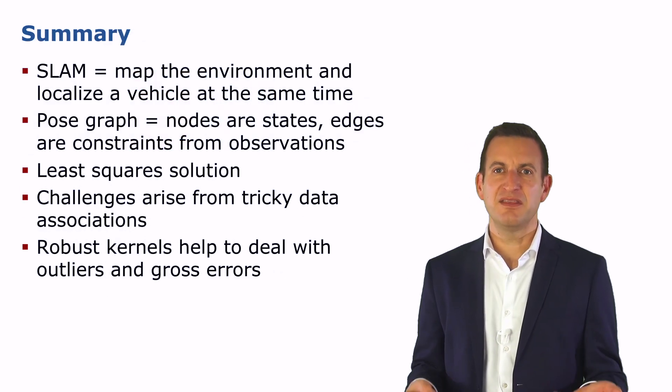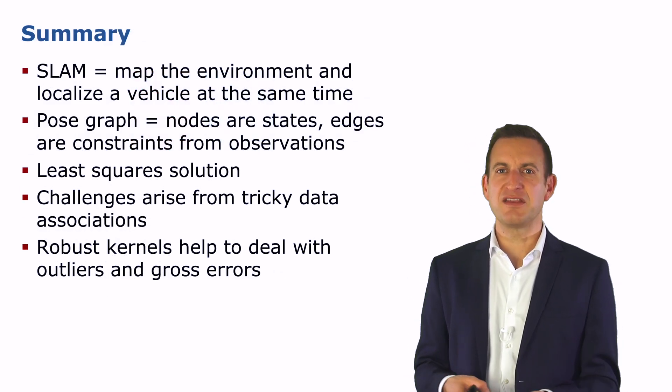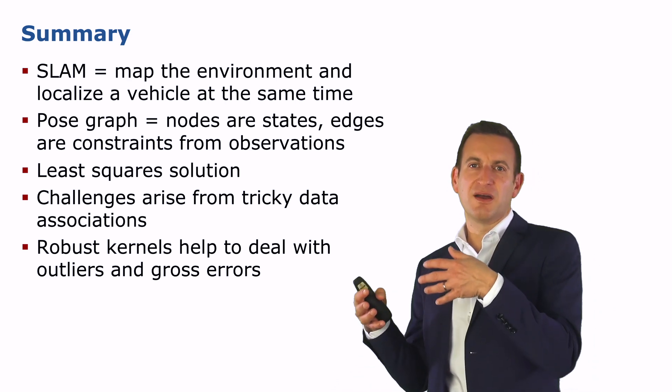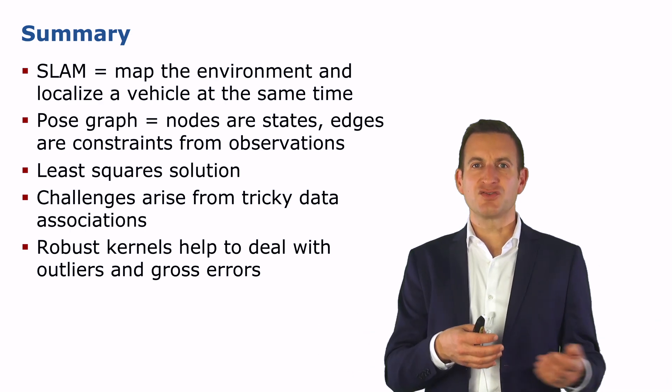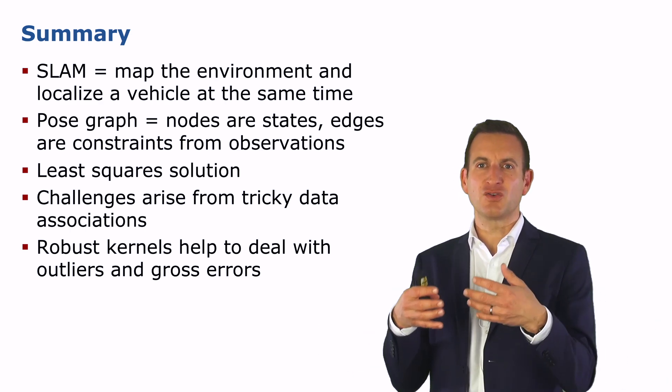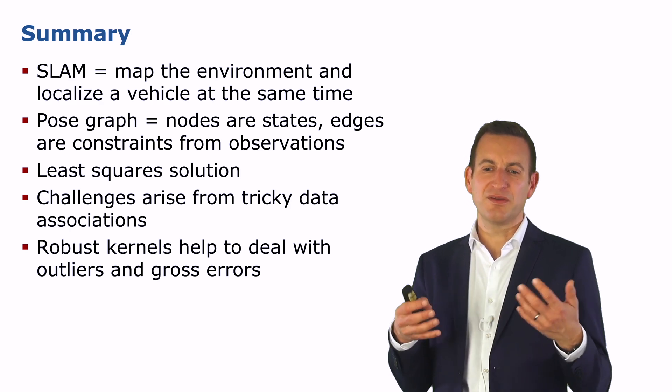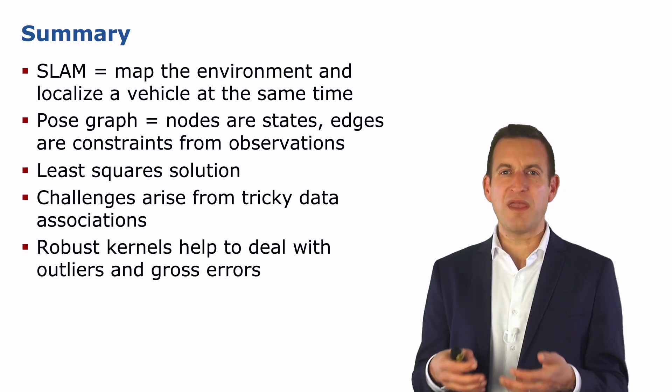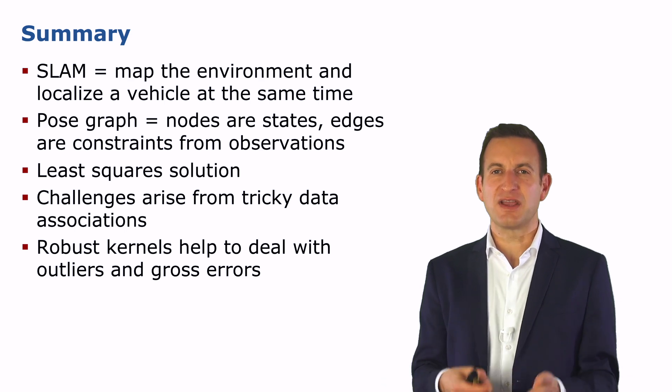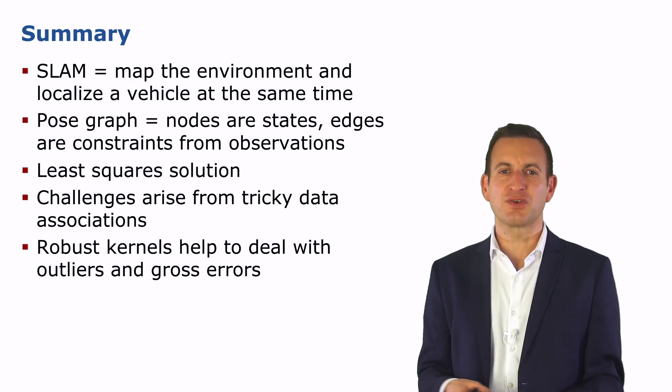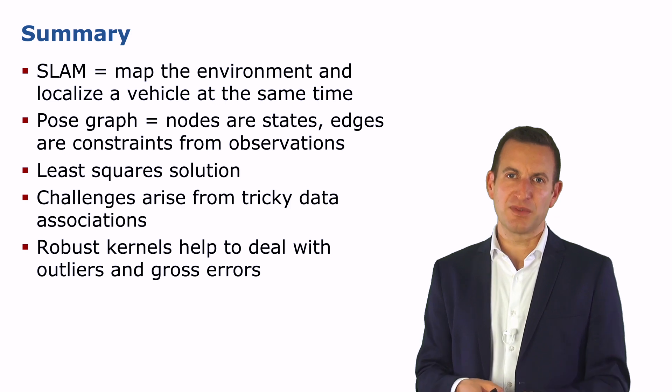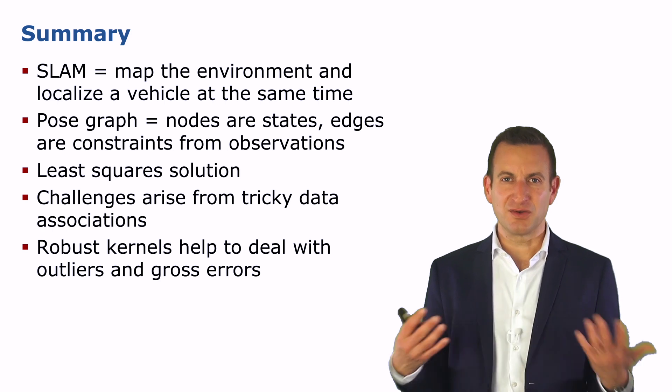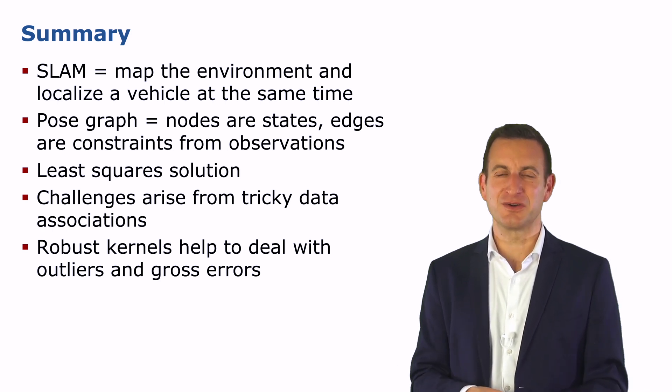And with this, I'm coming to the end of these three lecture series on the simultaneous localization mapping problem. Wolfram introduced the pose graph with states as nodes and edges as constraints. Then Giorgio introduced the least squares problem on how to minimize the error introduced by these constraints. We have seen that data associations are tricky to do, and therefore we need to have a way for dealing with the wrong constraints, such as outliers. And these are the robust kernels that I've introduced here as the way for dealing with gross errors and outliers and still being able to build a good map of the environment. So, I hope you enjoyed this video series, and thank you very much for your attention.